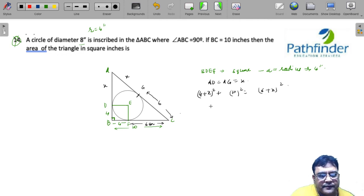If you solve this, you will get (6 plus X) whole square minus (4 plus X) whole square is equal to 100.